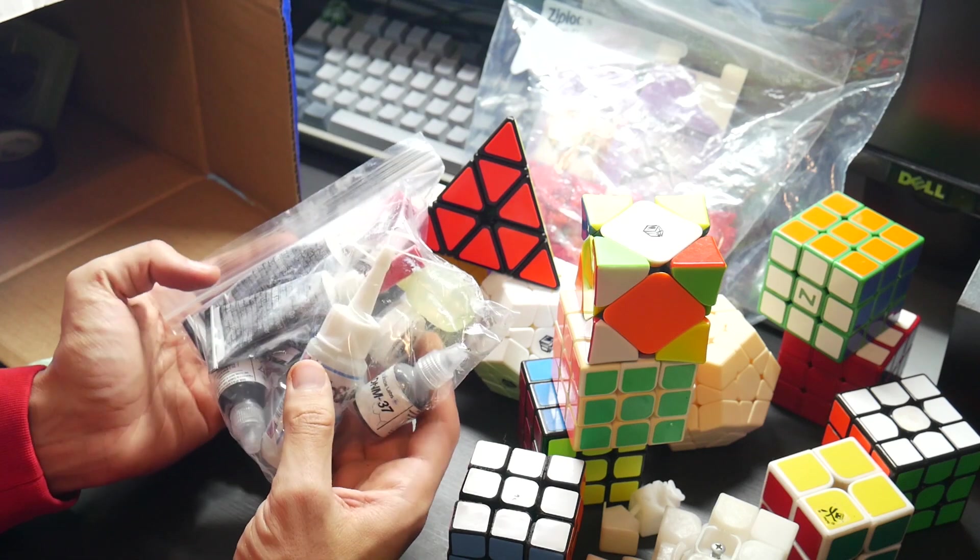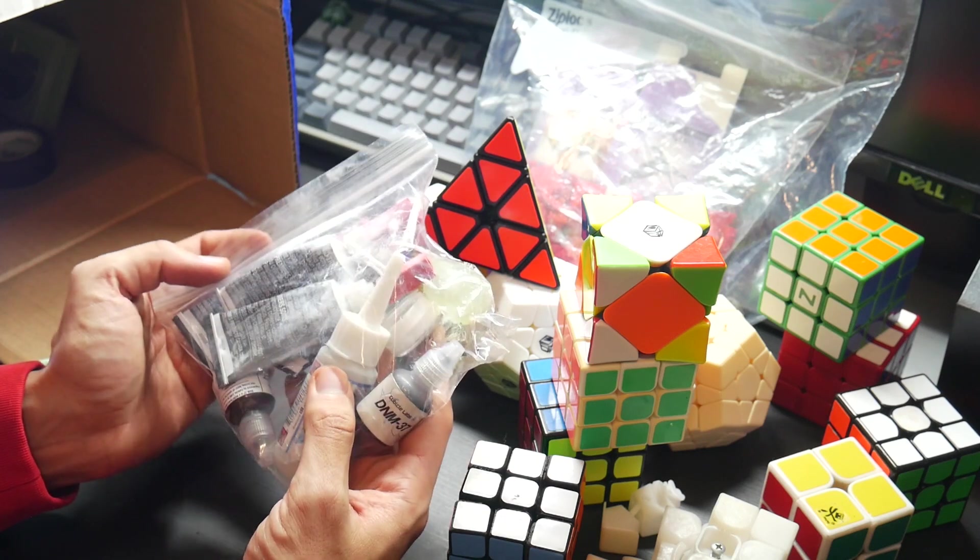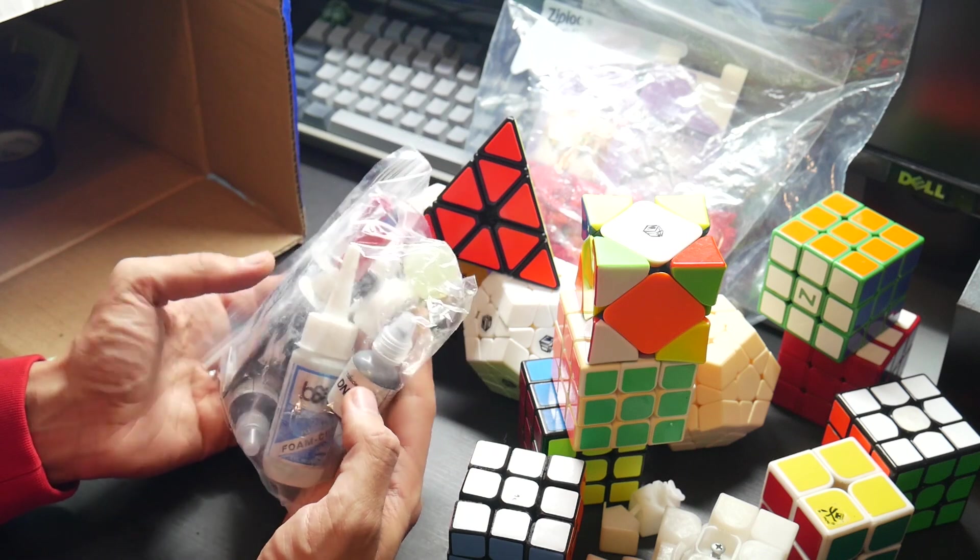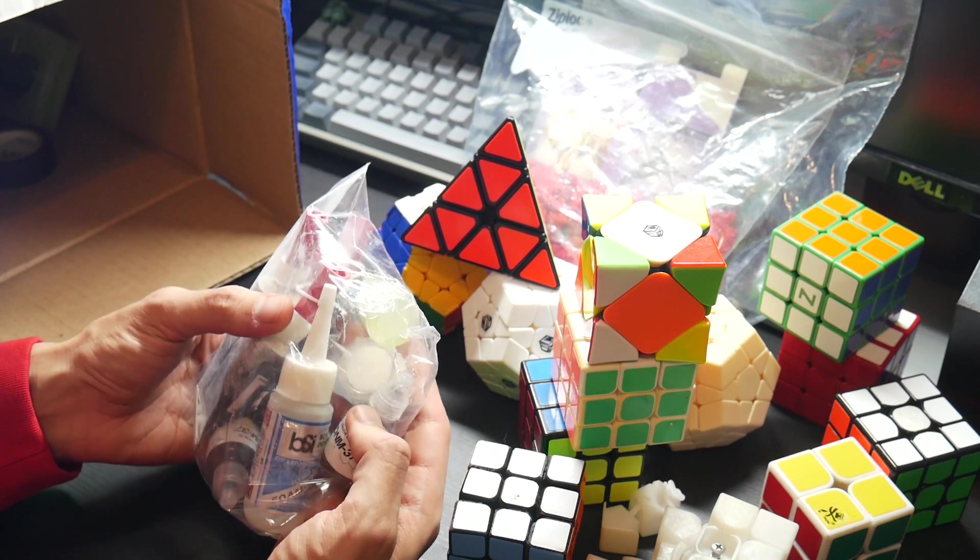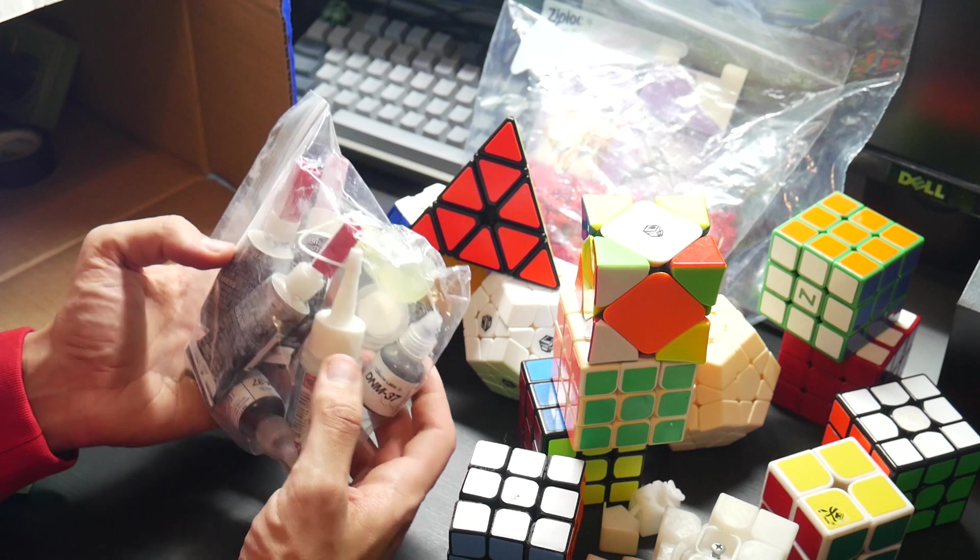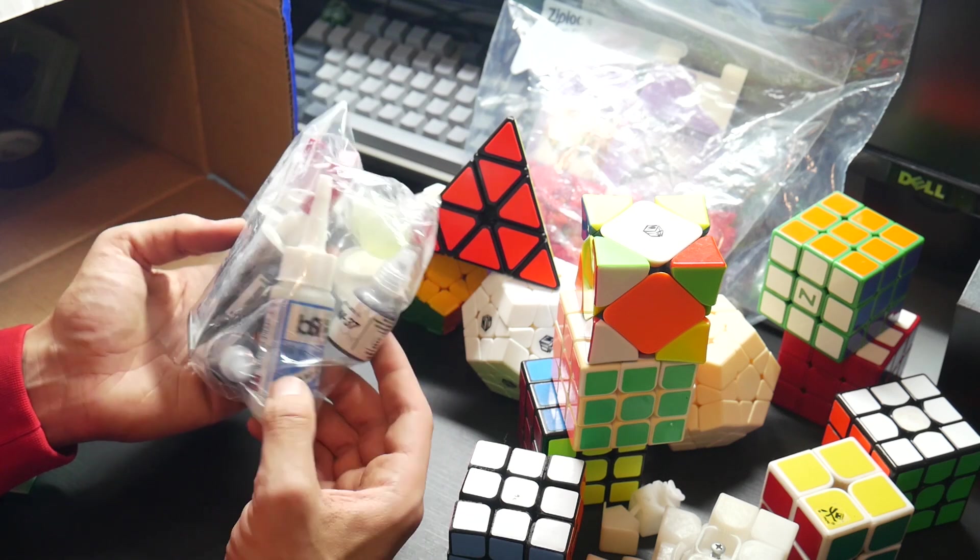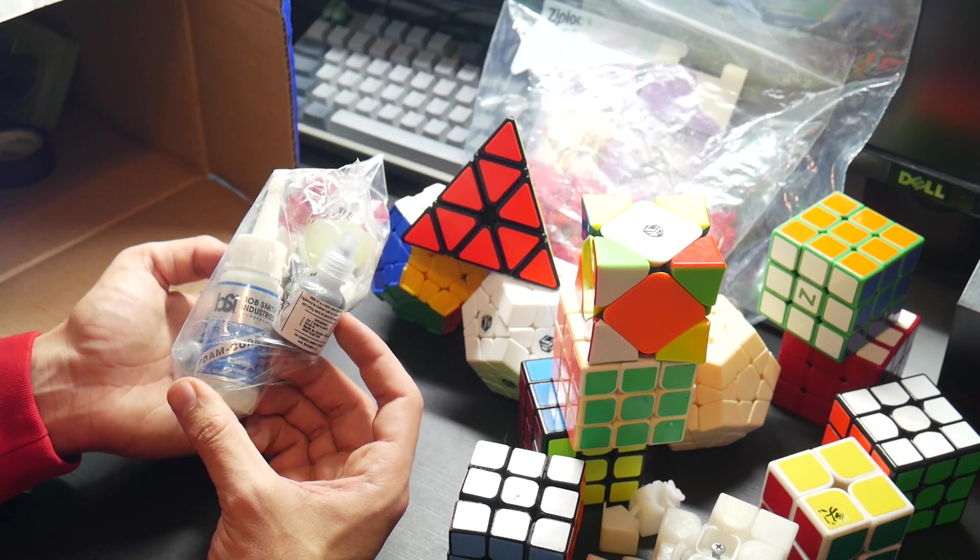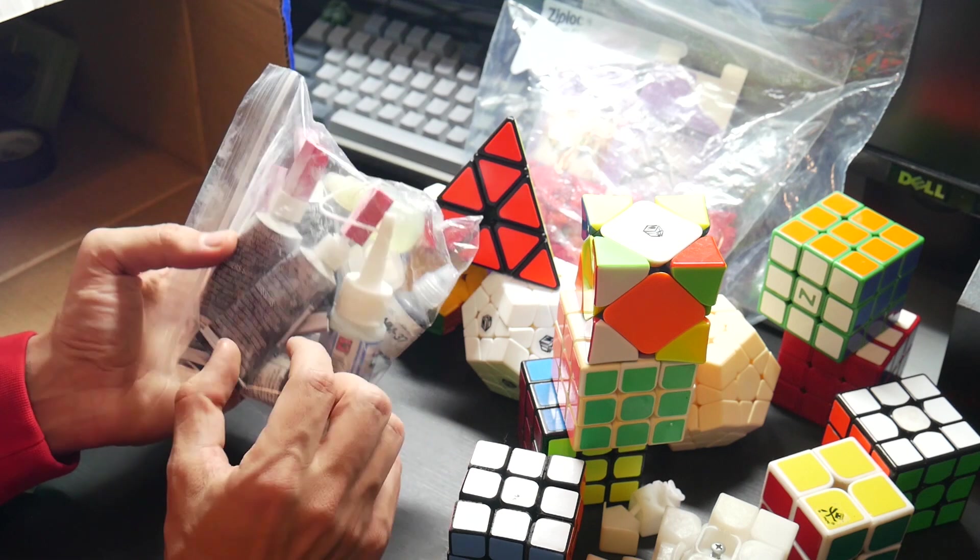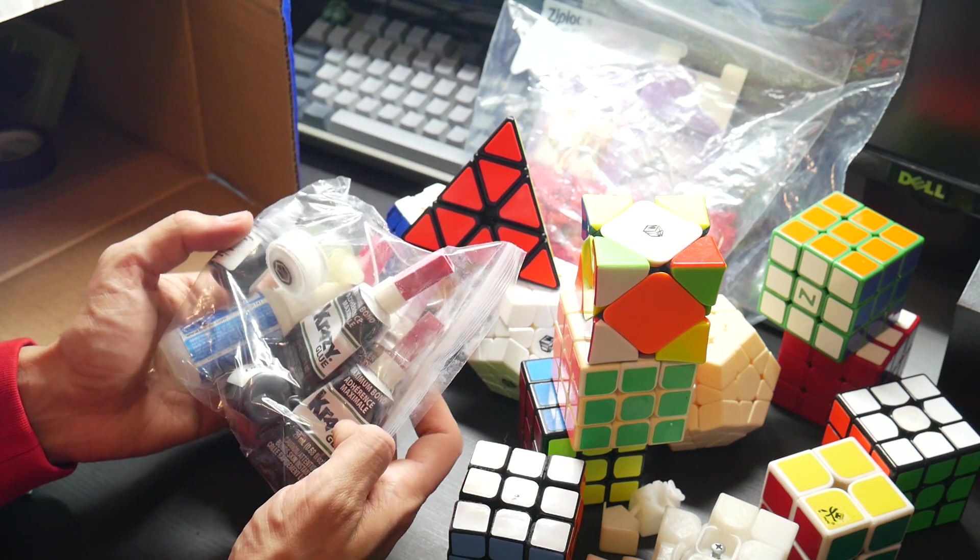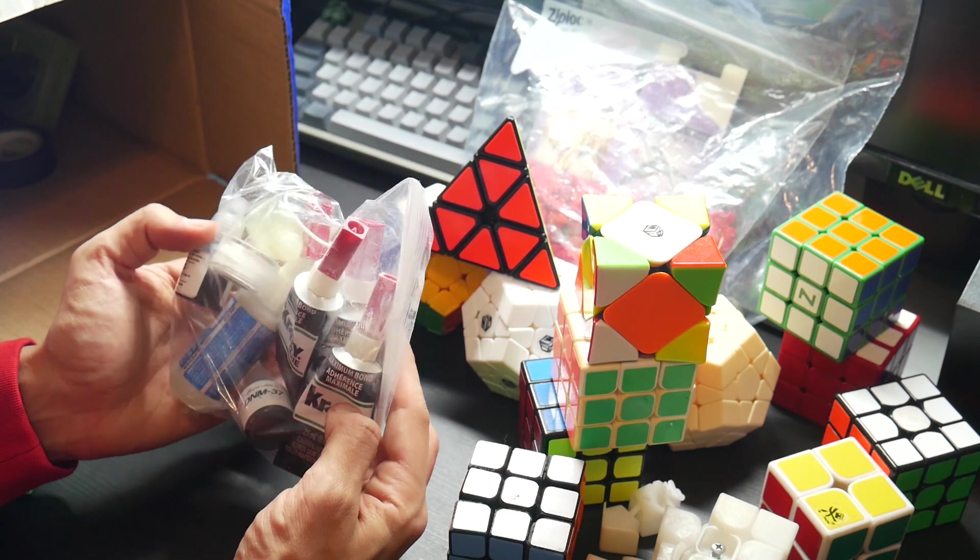Next up we got a ton of lube and glue for making Maple cubes. So in Maple cubes we used like Angstrom, we used DNM - the original ones - and we used tons and tons of glue to magnetize the puzzles. It's hilarious how much is still in there.